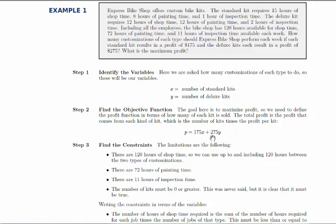And then the profit from deluxe kits is the profit for each one times the number of those that they do. So that's the total profit. So usually, your profit will be some sort of linear combination of x and y. So pay attention to how profit is described in the word problem. And you'll be able to find the objective function.